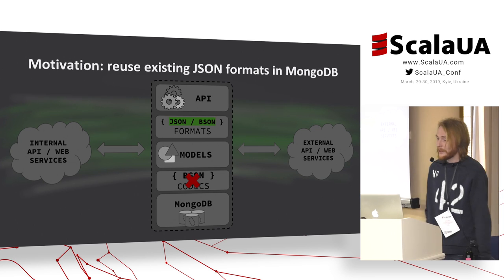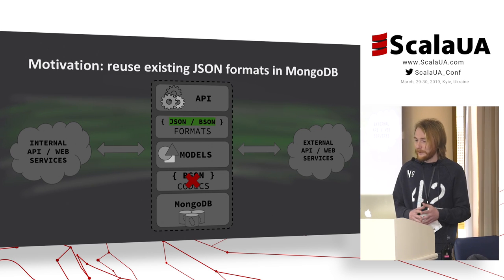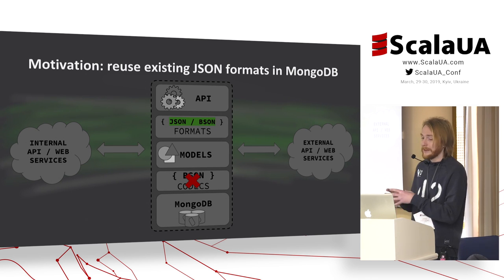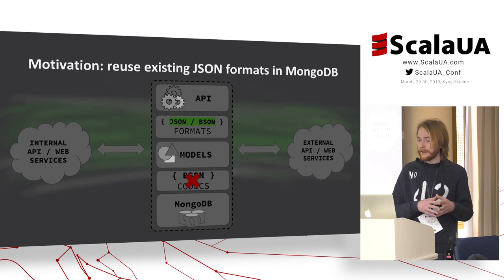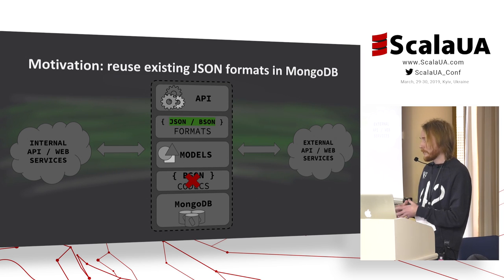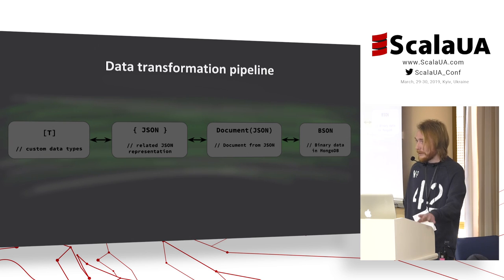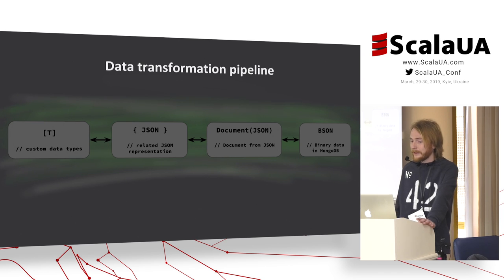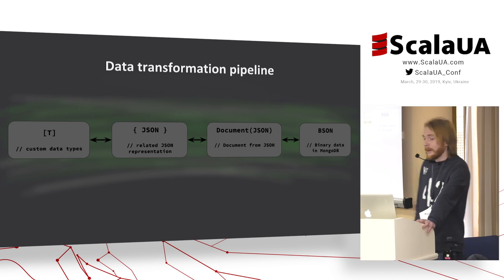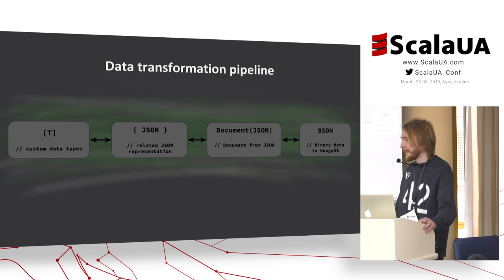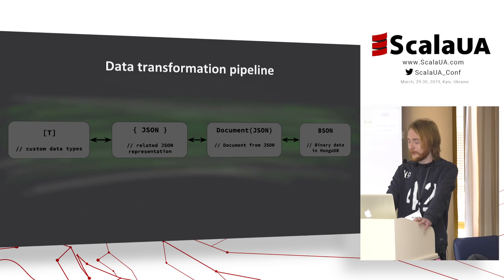Let's walk through the main idea one more time. If an application works with many API services, then JSON formats are already defined for all these models. And because MongoDB allows creating BSON documents from JSON, it should be possible to reuse existing JSON formats and skip implementation of BSON codecs. The transformation pipeline goes: custom data type is defined in the application, SprayJSON represents this type as JSON, the MongoDB Scala driver creates a BSON document from this JSON, and MongoDB stores the data document in binary format.